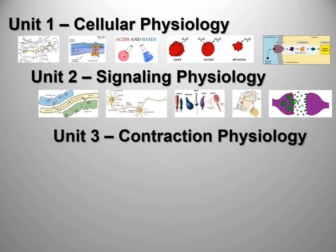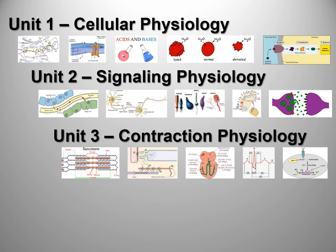Unit three is about movement and motion — what I call contraction physiology. This is going to be skeletal muscle, heart muscle, and smooth muscle. We're going to go through some of those mechanisms. This class is scaffolded: what we do in earlier units has tremendous importance for what we do in later units. We have to build on the knowledge as we go.